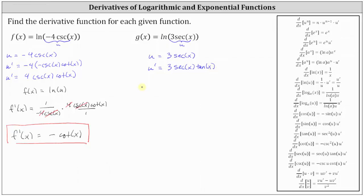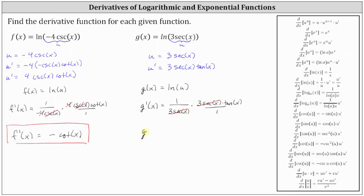So again, we can think of the original function as just g of x equals natural log u. The derivative of natural log u with respect to x is equal to one over u times u prime, giving us g prime of x equal to one divided by three secant x, times u prime, which is three secant x times tangent x. Simplifying, three secant x divided by itself simplifies to one, leaving us with g prime of x equal to tangent x.